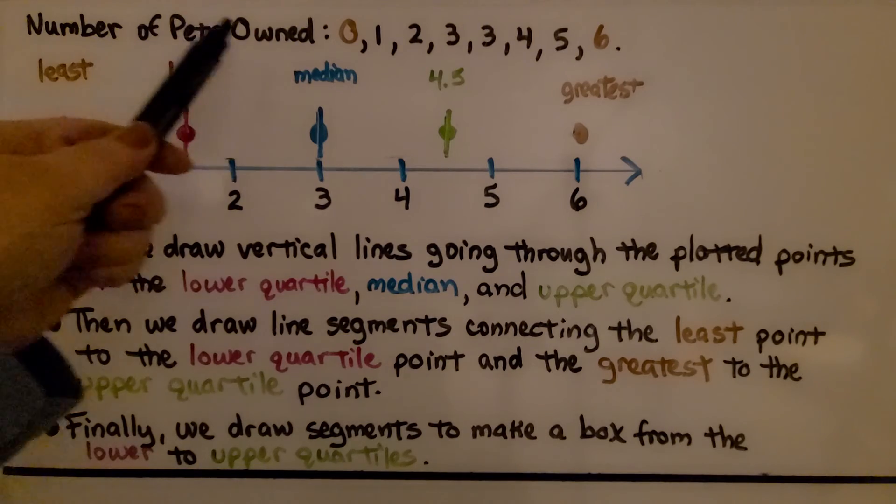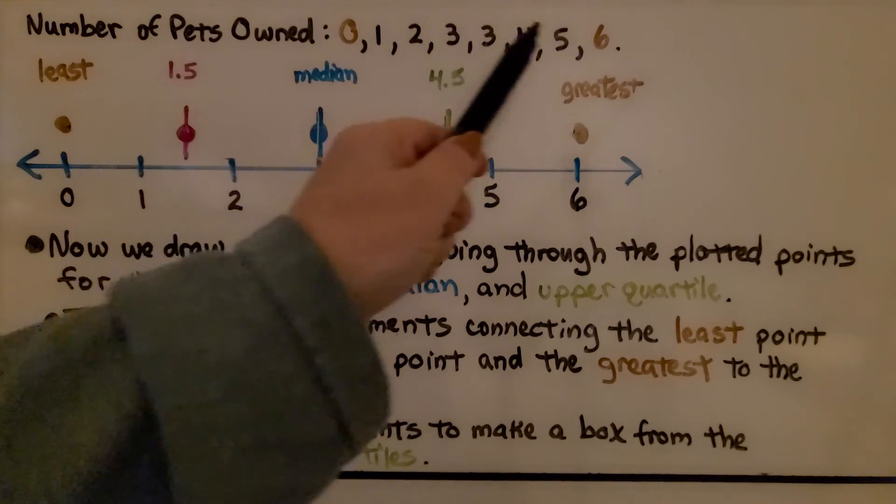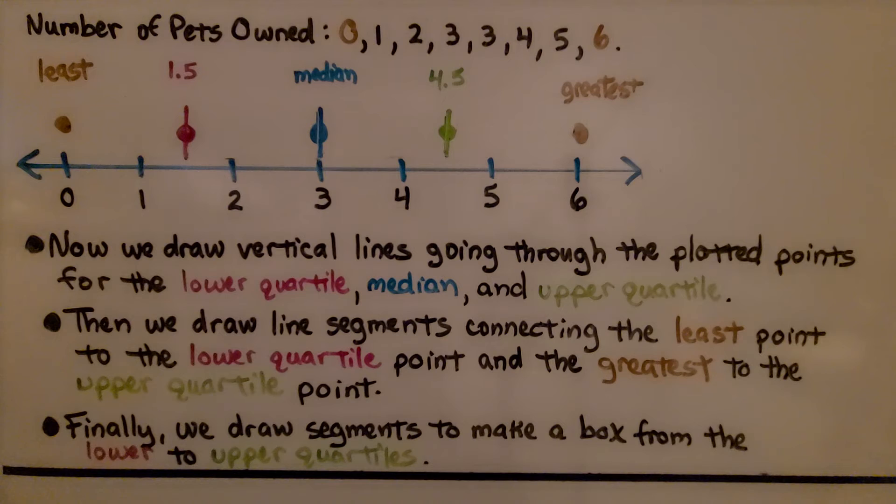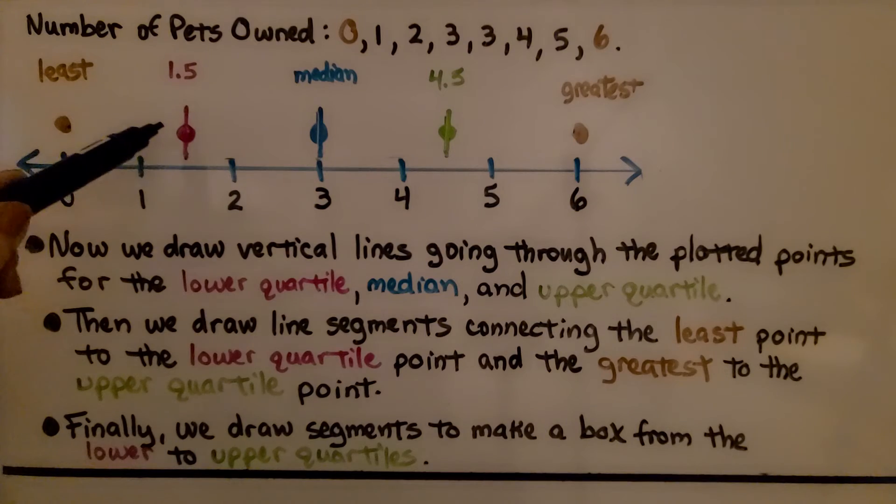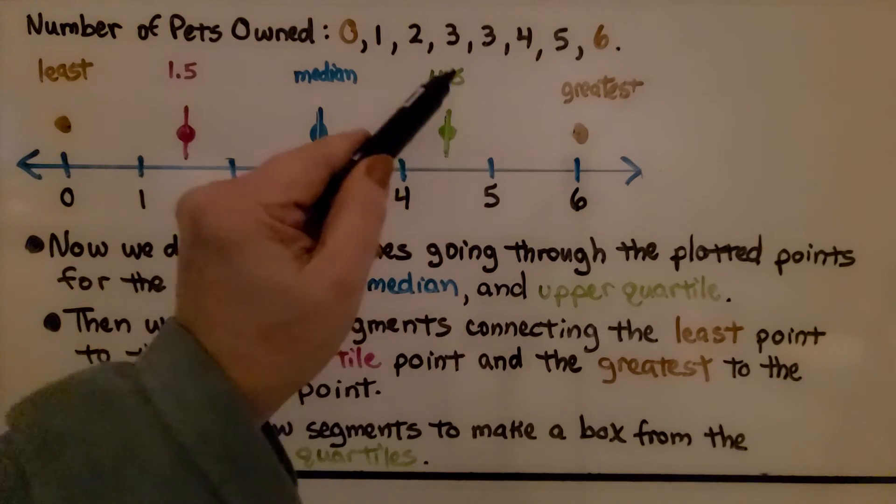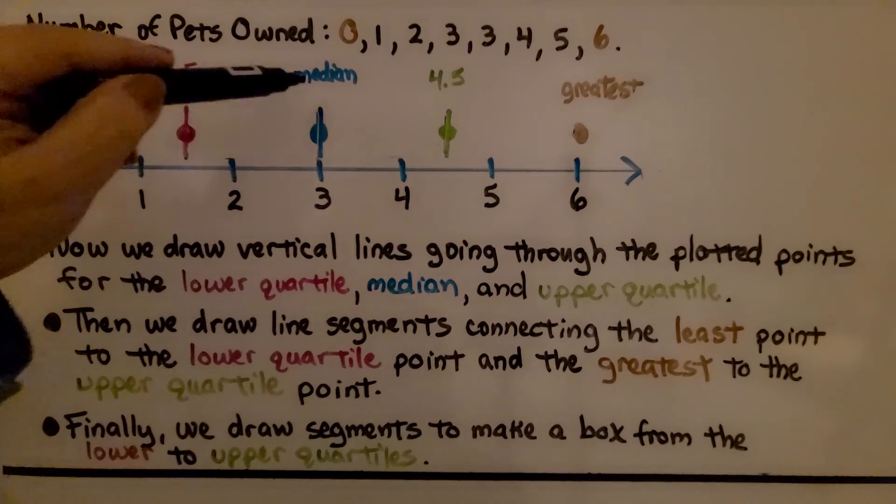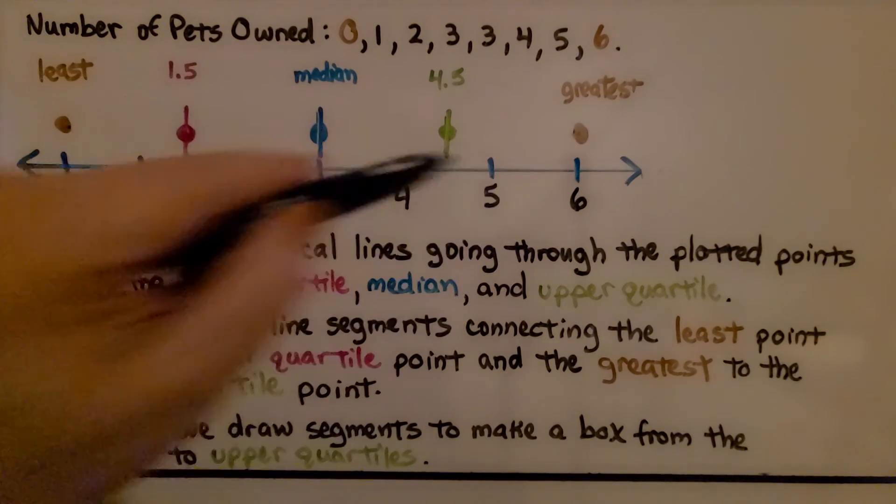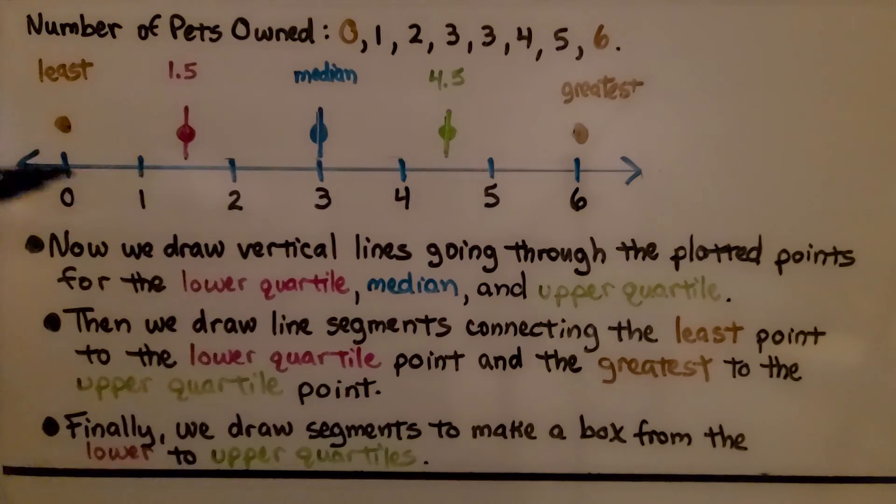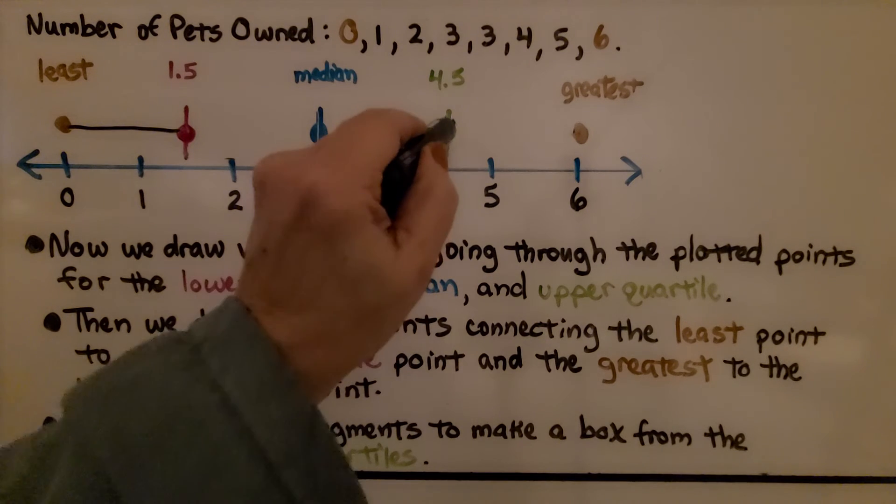So we have the number of pets owned, the data values, in order from least to greatest. We draw vertical lines going through the plotted points for the lower quartile, the median, and upper quartile. So we've got these vertical lines going through these three and we've got our greatest and least above the number line. Now we draw line segments connecting the least point to the lower quartile and the greatest to the upper quartile.